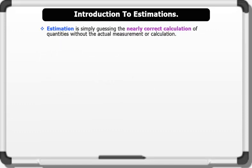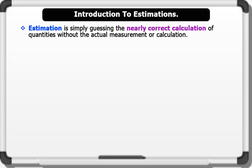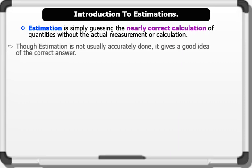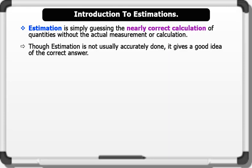Introduction to Estimations. Estimation is simply guessing the nearly correct calculation of quantities without the actual measurement or calculation. Though estimation is not usually accurately done, it gives a good idea of the correct answer.